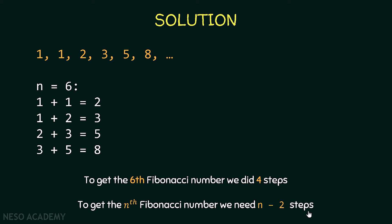We can conclude that to get the nth Fibonacci number we need n-2 steps. So we are going to perform operations inside a loop, and this loop is going to run for n-2 iterations.